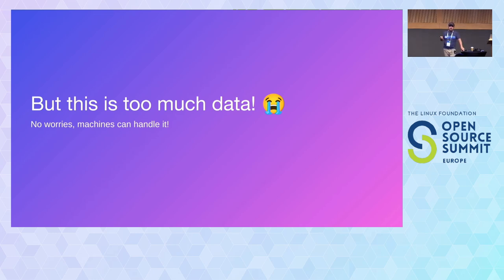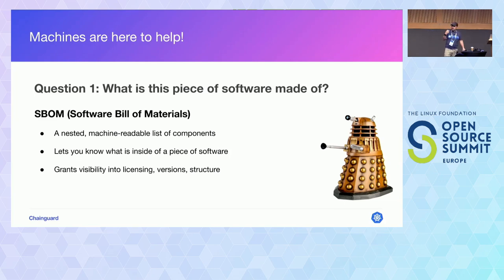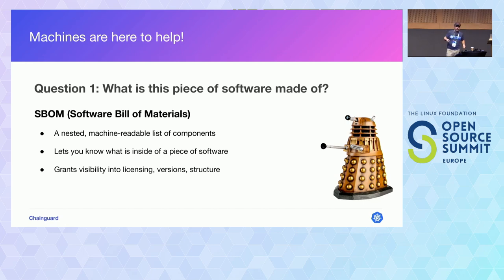Machines are here to help us. We have new machine-readable manifests that give us that information. The first is the Software Bill of Materials — the SBOM — which is a list of components inside a piece of software giving you information about what the components are, how the structure looks, what the licensing is, how components relate to each other, and even some information not directly detectable in the artifact itself, like what tools were used to build it.